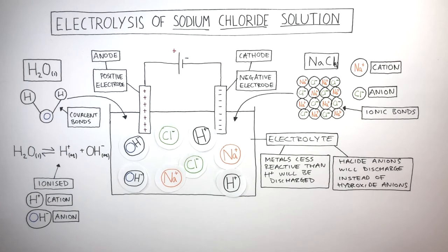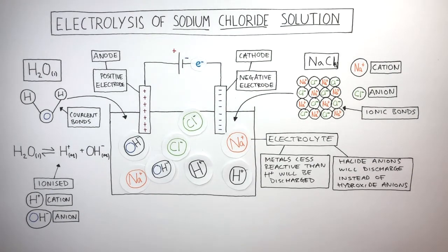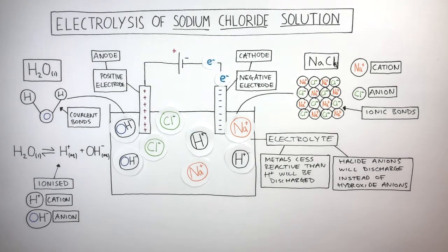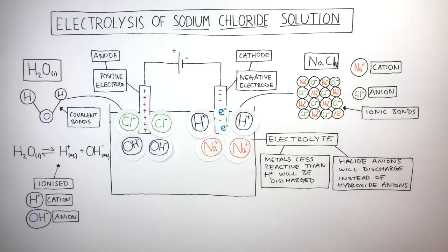Let's now focus on what happens in the metal wire and the electrolyte. Electrons flow from the negative terminal. In the electrolyte, the ions are free to move, so the positive cations are attracted to the cathode and the negative anions are attracted to the anode. At the same time, electrons are flowing through the metal wire to the cathode.